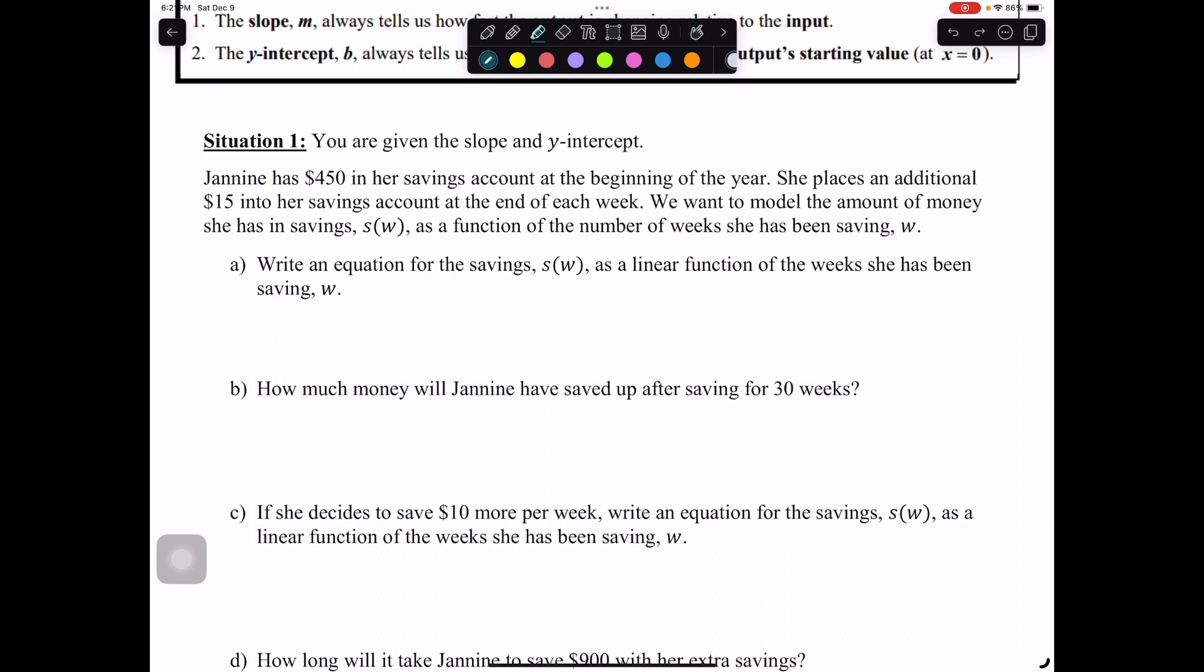Part a says write an equation for the savings, s of w, as a linear function of the weeks she has been saving, w. Remember, slope and y-intercept. We know from our lessons on writing the equation of the line, those are the two things that we need to write the equation. Looking at the description, the first thing I see is she has $450 in her account at the beginning of the year. That's where we are starting. That means that's the y-intercept. Then I see she places an additional $15 in her account at the end of each week. That's describing a rate of change, which means this is giving us our slope.